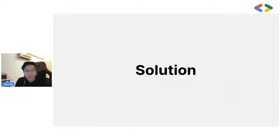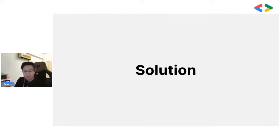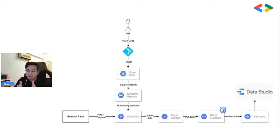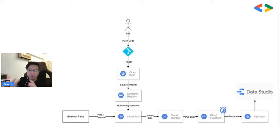I won't be showing code since it could be proprietary, but I'll walk through the architecture and solution. This is the entire architecture — it might seem overwhelming at first, but I'll break it down. Let's start by understanding how we build Cloud Run and get it up and running before using it as a webhook.